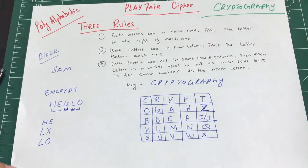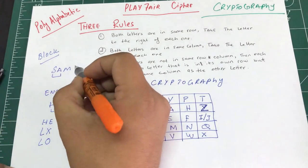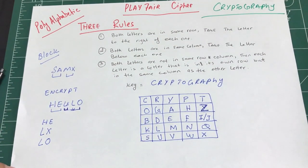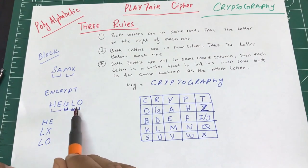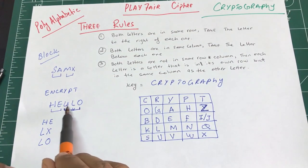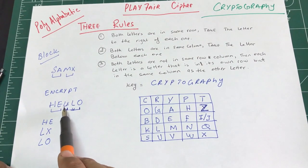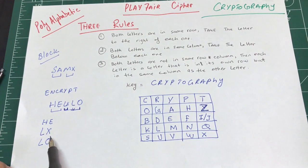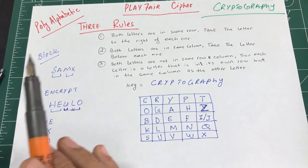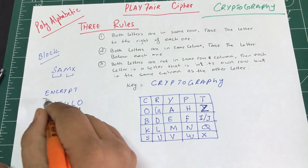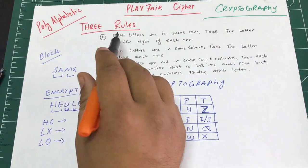Another scenario: if you have a word like 'SAM' — an odd number of letters — you can't make a complete pair, so you introduce a bogus character X or Z at the end. To recap: for 'hello' we got pairs HE, LX, and LO. Now let's encrypt using the three rules.